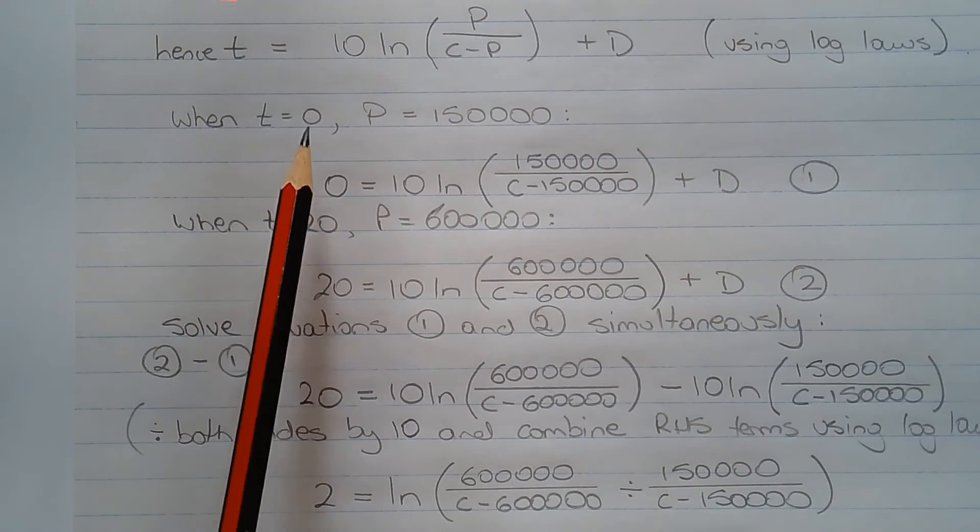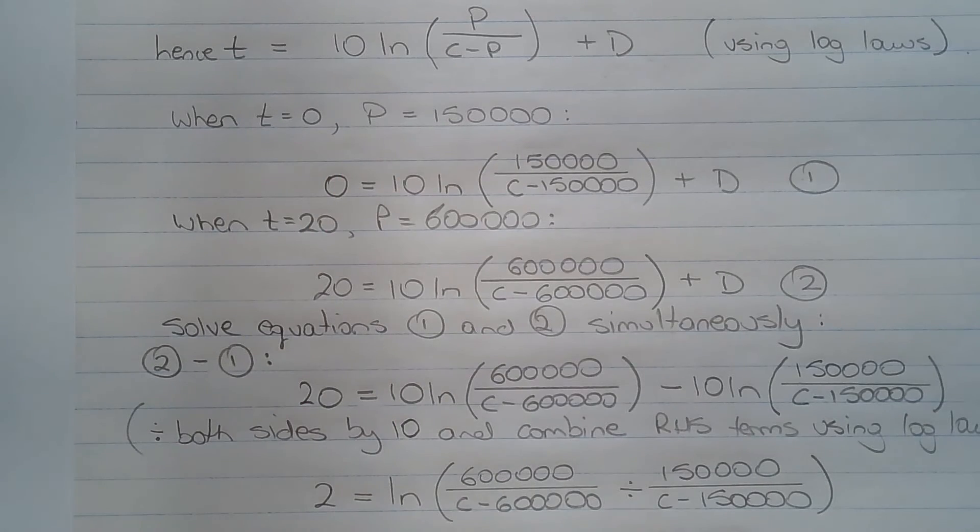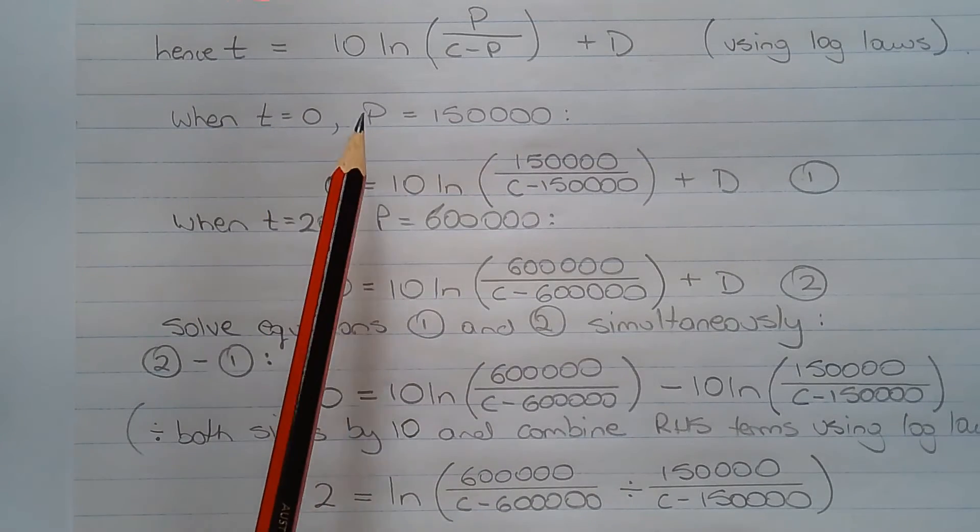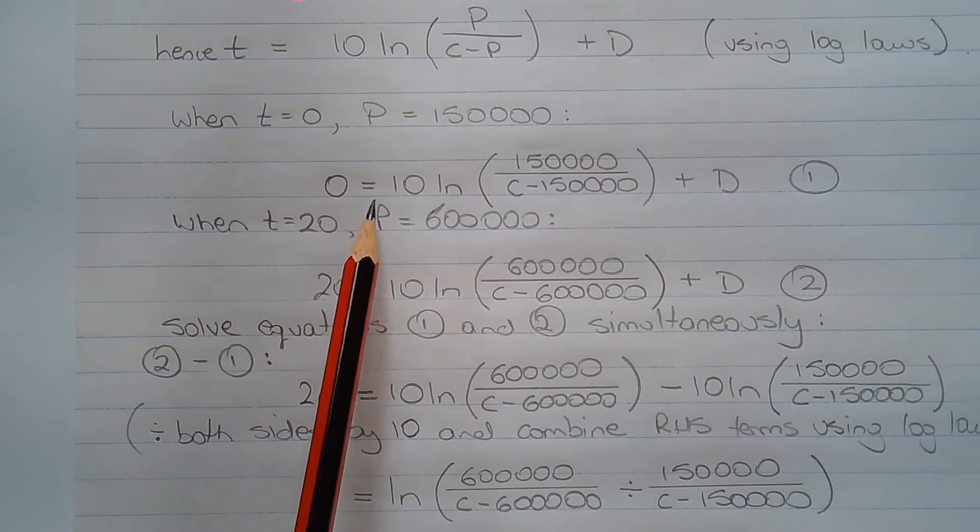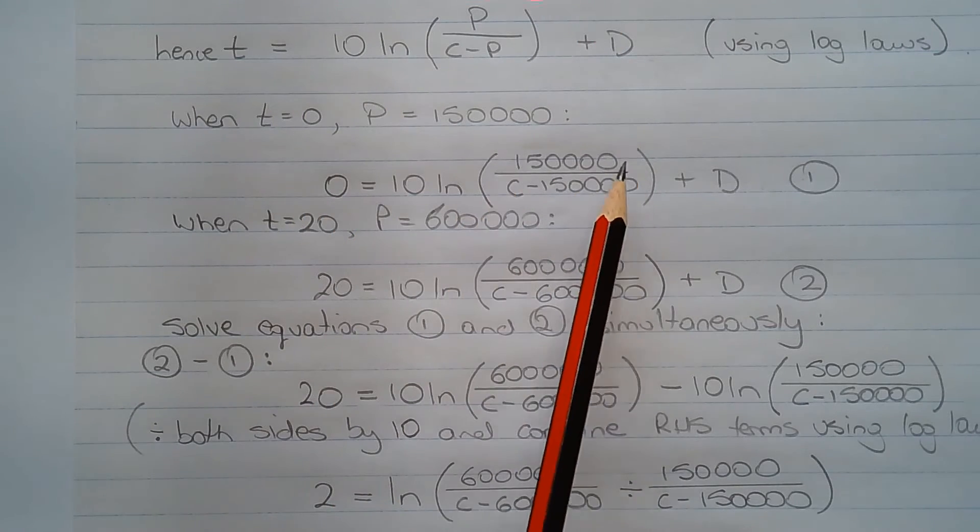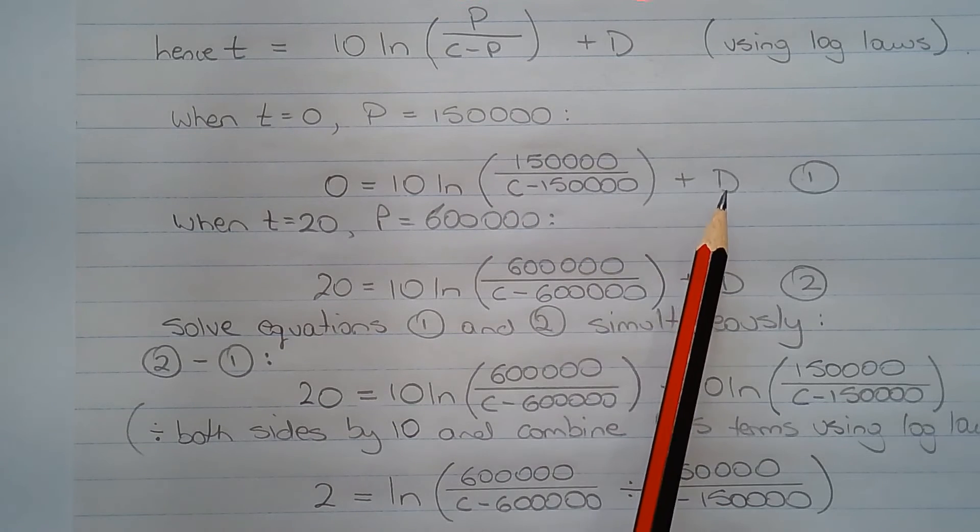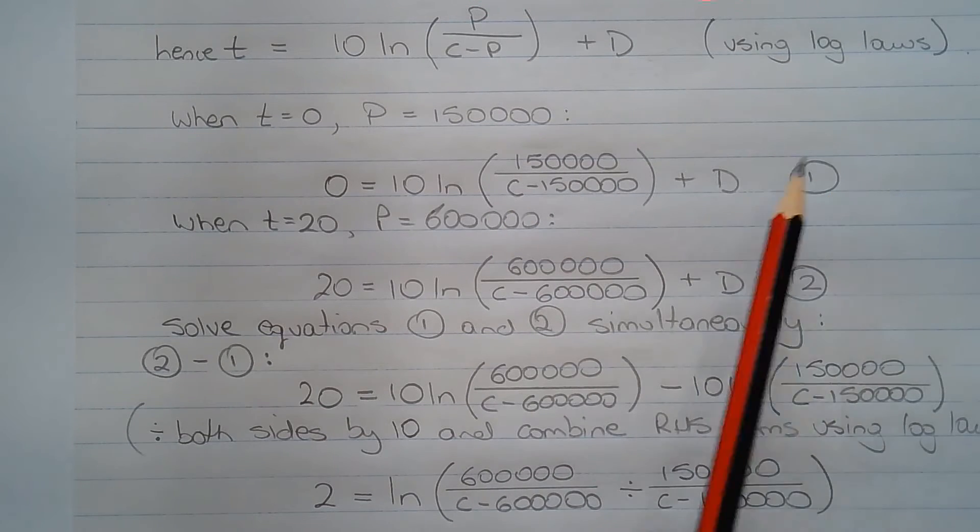Now when t equals 0, that's the initial population, is 150,000, we can substitute t equals 0 and p equals 150,000 into this equation. And we get 0 equals 10 ln of 150,000 over (c minus 150,000) plus the constant d. And we'll call that equation number 1.